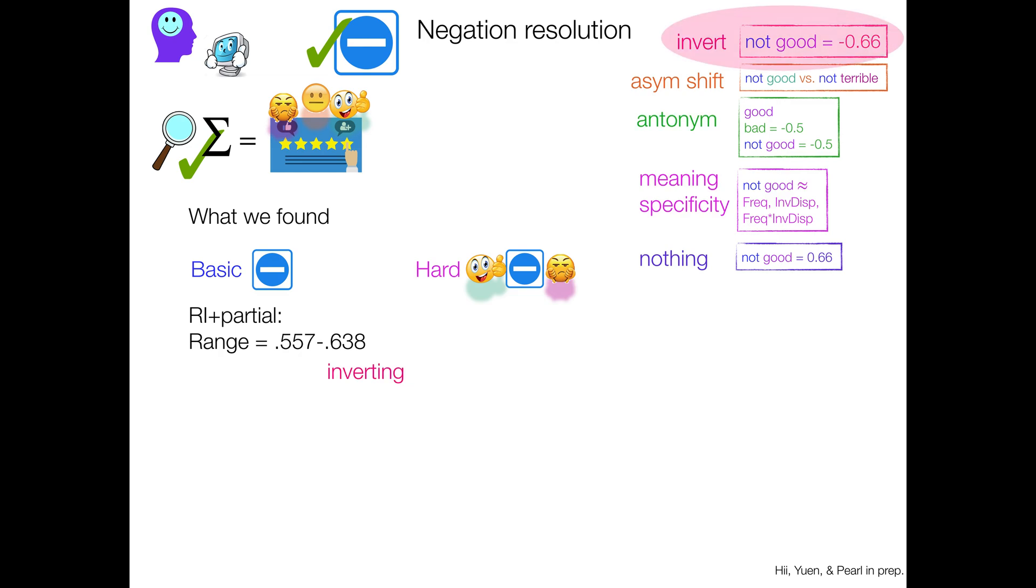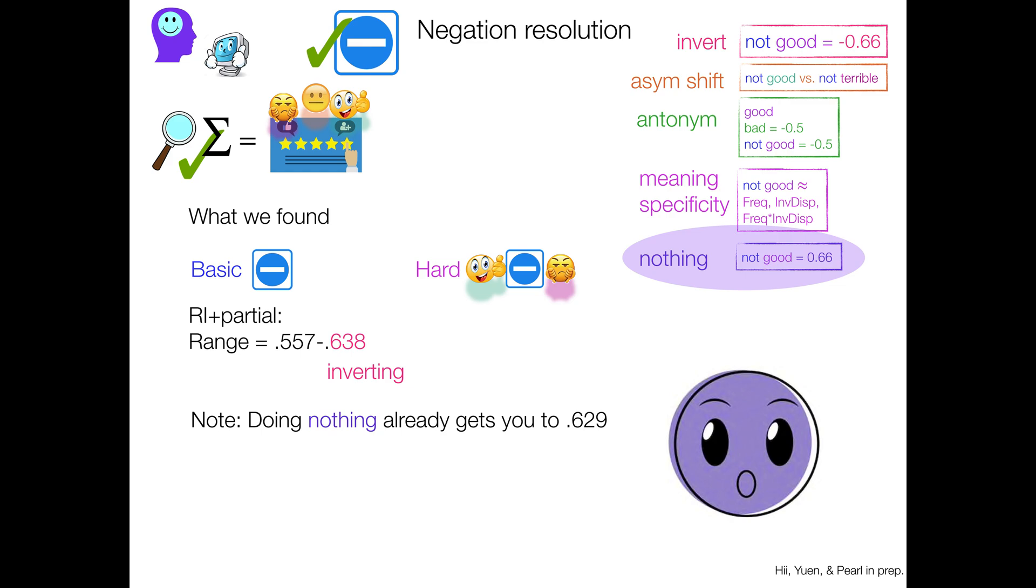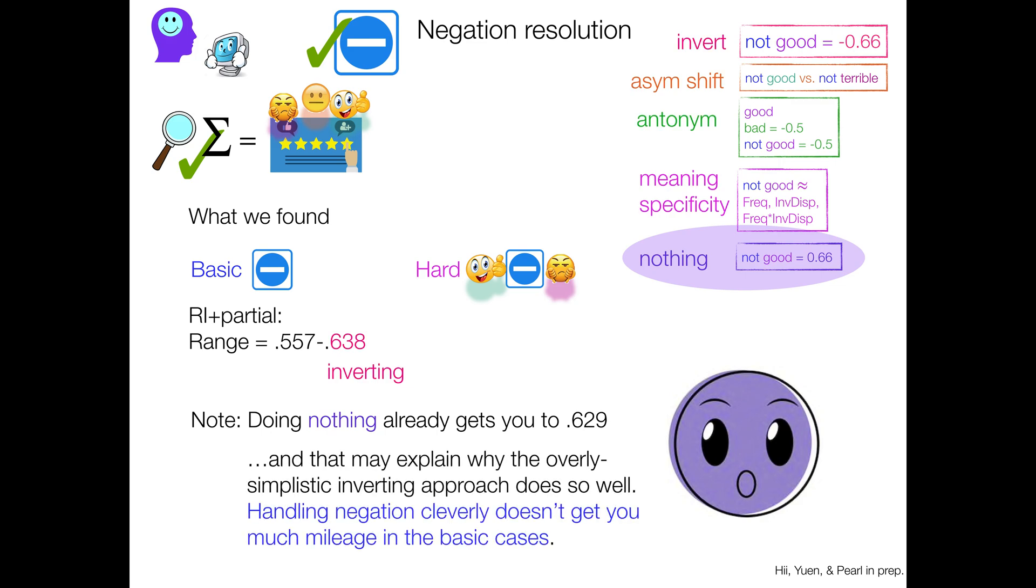In fact, the best performance was achieved by inverting, like the super simple thing. Like literally the simplest thing you could do, I guess, except for nothing. But guess what? Doing nothing already gets you to 0.629 of this partial, this performance. So that may explain why the overly simplistic inverting approach does so well, because handling negation cleverly doesn't get you much mileage in these basic cases.